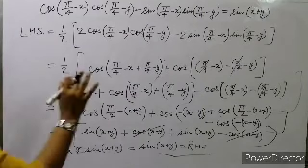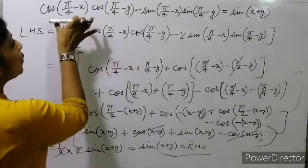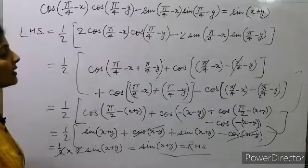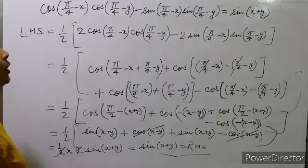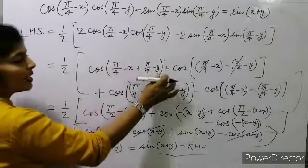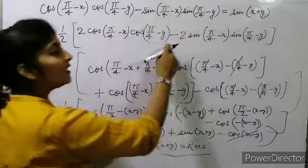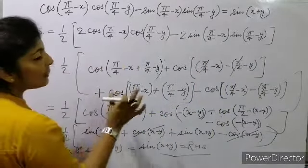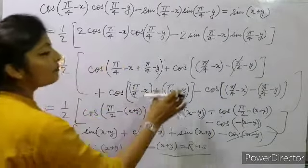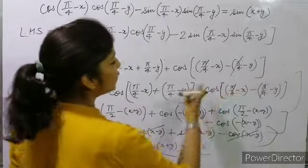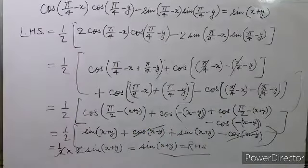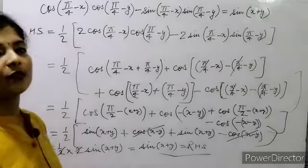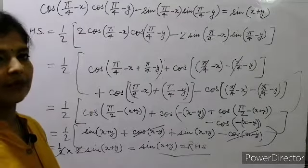So to summarize what we did: we used the formula 2cos A cos B = cos(A+B) + cos(A−B), and the formula −2sin A sin B = cos(A+B) − cos(A−B). We also applied the identity cos(π/2 − θ) = sin θ to complete the proof.